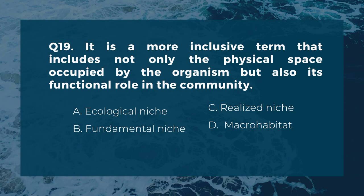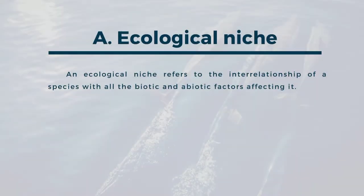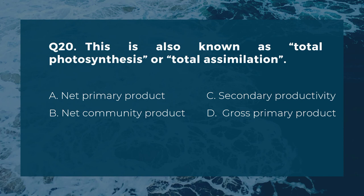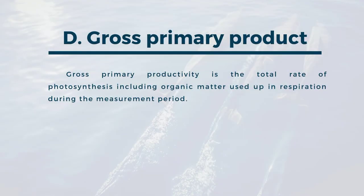Question nineteen: it is a more inclusive term that includes not only the physical space occupied by the organism but also its functional role in the community. A) ecological niche, B) fundamental niche, C) realized niche, D) macrohabitat. The correct answer is A, ecological niche. An ecological niche refers to the interrelationship of a species with all the biotic and abiotic factors affecting it. Question twenty: this is also known as total photosynthesis or total assimilation. A) net primary product, B) net community product, C) secondary productivity, D) gross primary product. The correct answer is D, gross primary product — the total rate of photosynthesis including organic matter used up in respiration during the measurement period.